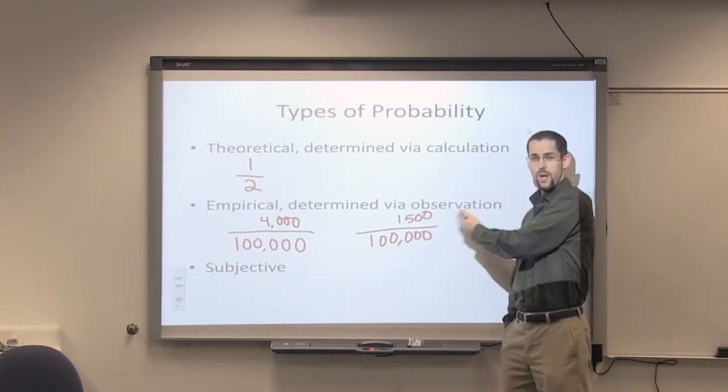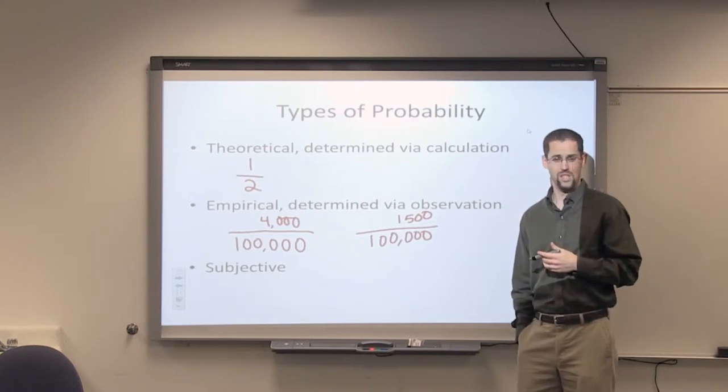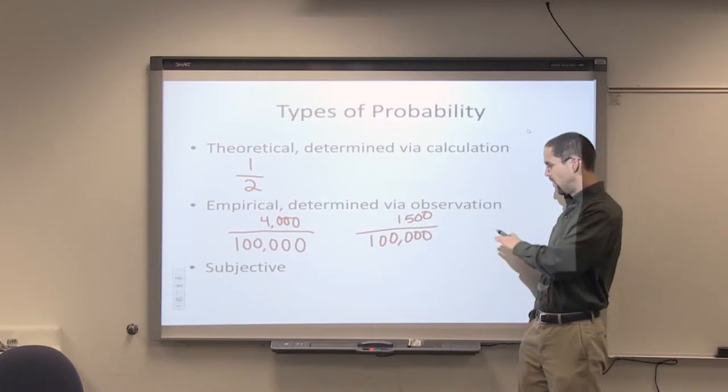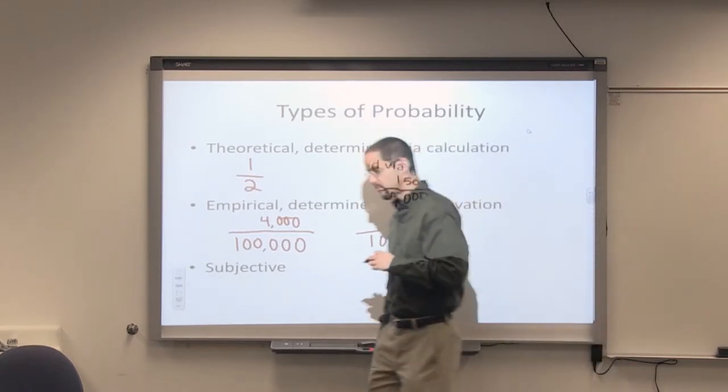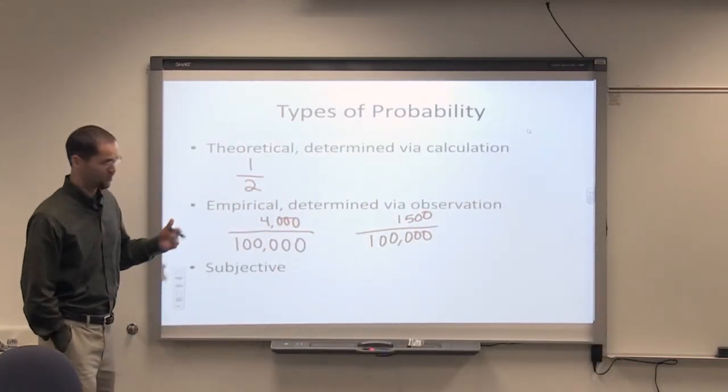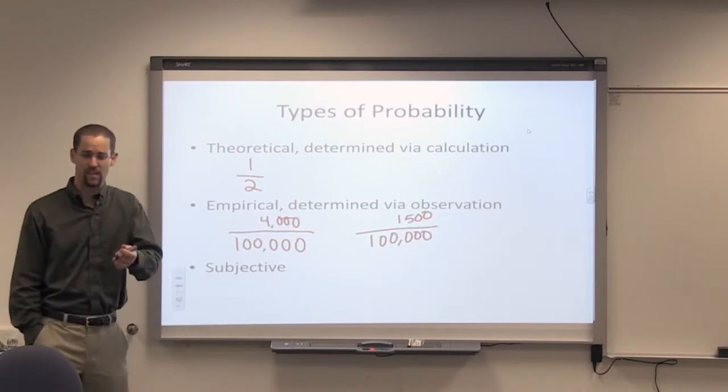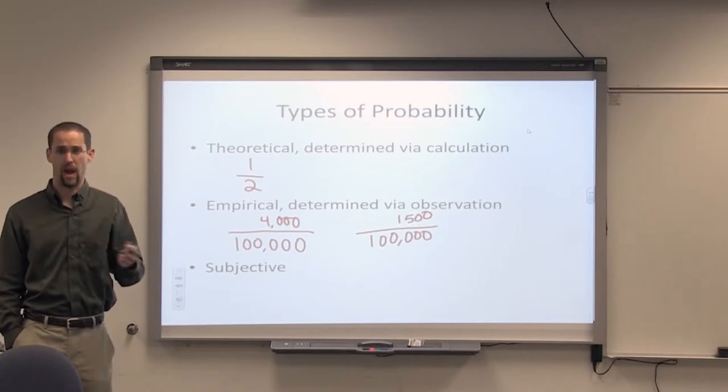Again, you might be one of these 1,500. You might not be. You don't get to know. The insurance company doesn't know and they need to spread their cost across all their insured drivers. That's empirical or determined by observation. There's no way to theoretically calculate your probability of having an accident. We don't know until the end of the year when you look back.